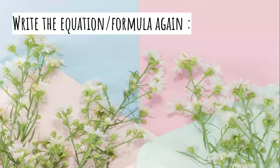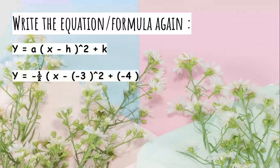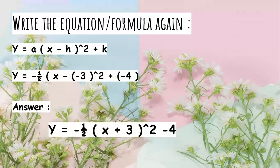Write the equation formula again: y = a(x - h)^2 + k. So y = -1/2(x - (-3))^2 + (-4). The answer is y = -1/2(x + 3)^2 - 4.